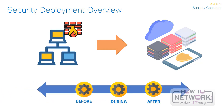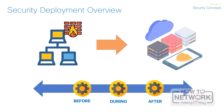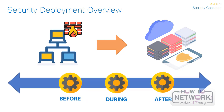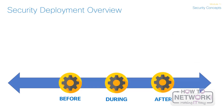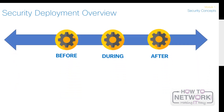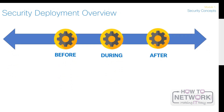The attack continuum is divided into three phases: before, during, and after. Understanding these phases is important because this continuous model is consistent with how companies secure, defend, and audit networks on a day-to-day basis and can help analysts suggest better solutions that provide protection throughout the attack continuum. The best way to communicate the overall security challenge is to look at the attack continuum while trying to defend the network.